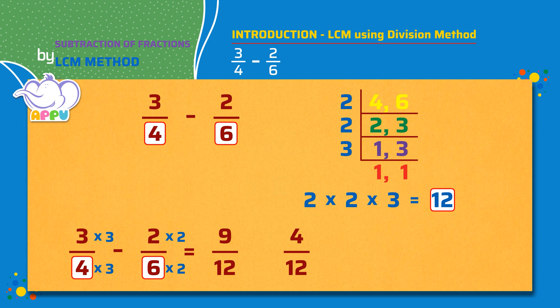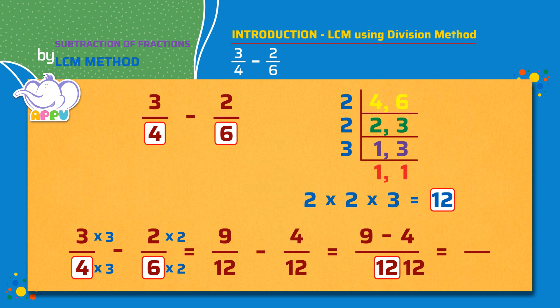This becomes 9 by 12 minus 4 by 12. Now the denominators are the same for both the fractions, that is 12. We write the denominator as 12 and we subtract the numerators. 9 minus 4 equals 5. The answer is 5 by 12.